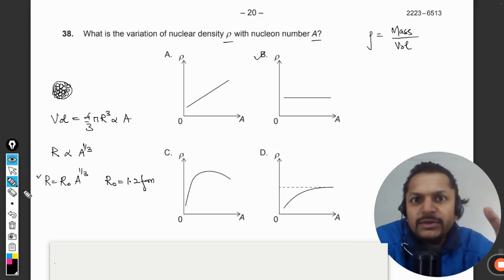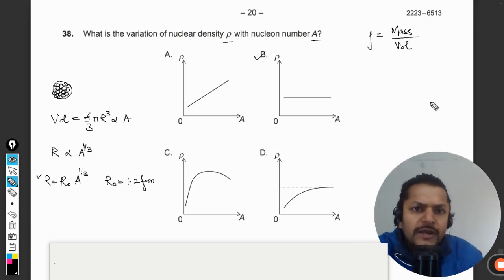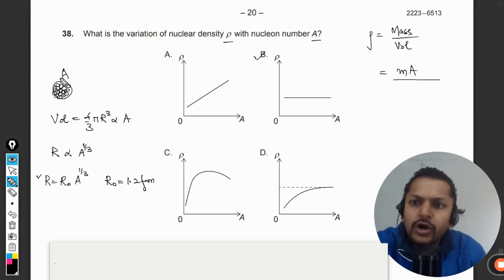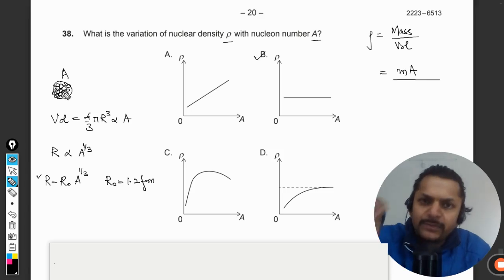r₀ is a constant and this is the radius of a nucleus. This is the formula that we use to estimate the radius of the nucleus of various nuclei as per their mass number. Coming back to this, let's say there is a nucleus with mass number A. The mass of a neutron and proton is approximately equal to 1 amu, I'm just taking it as m times A, the total number of nucleons.